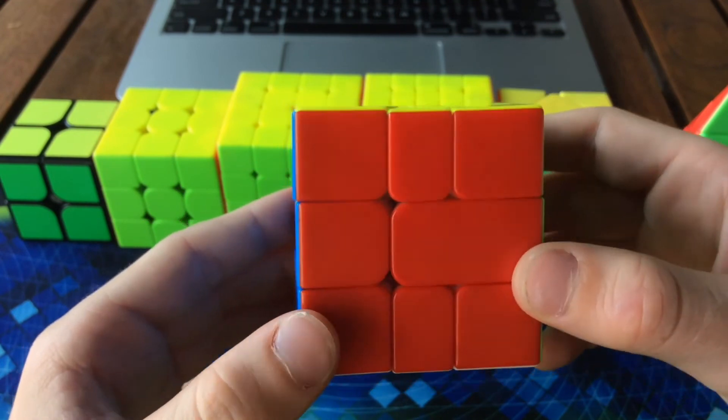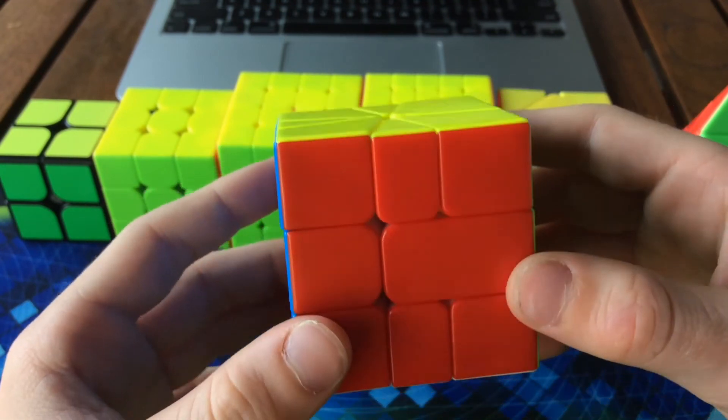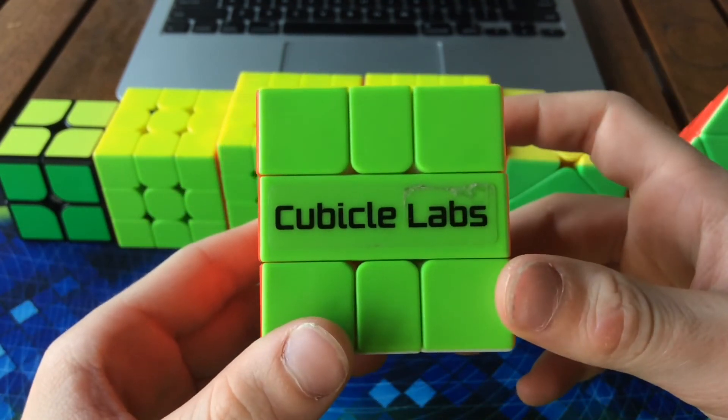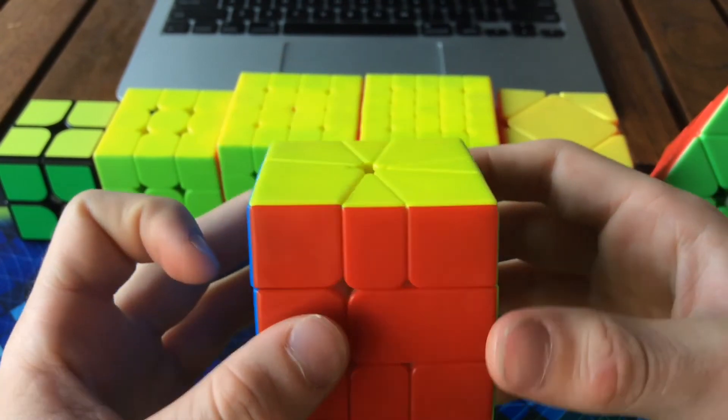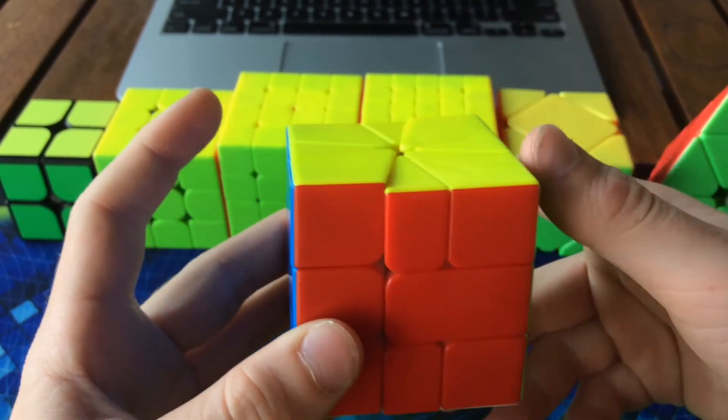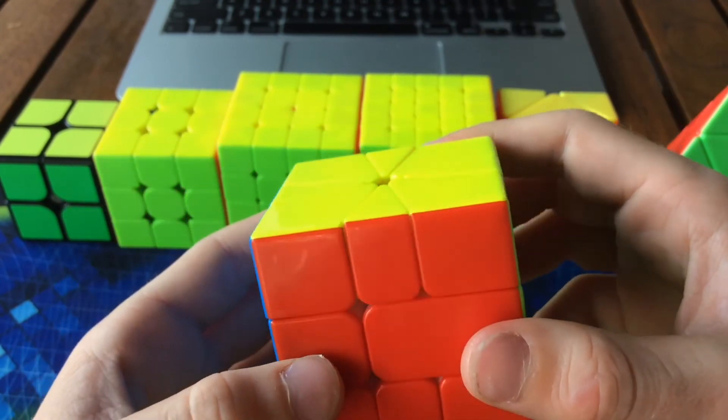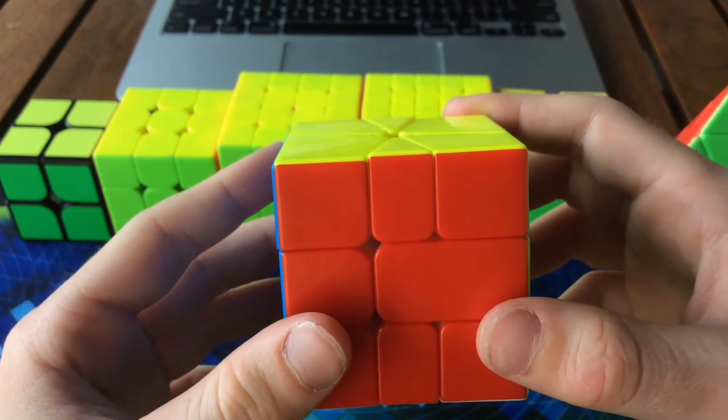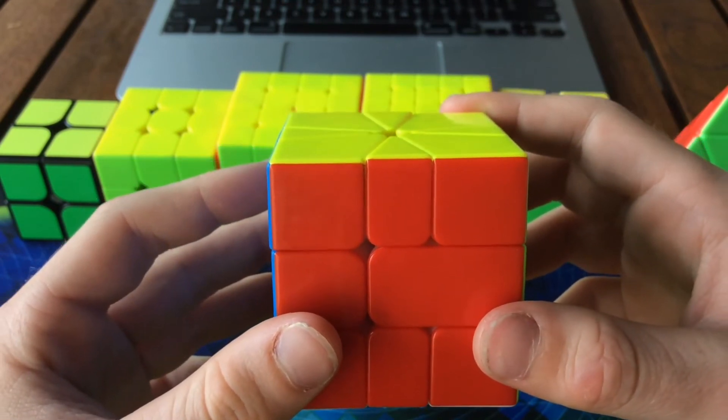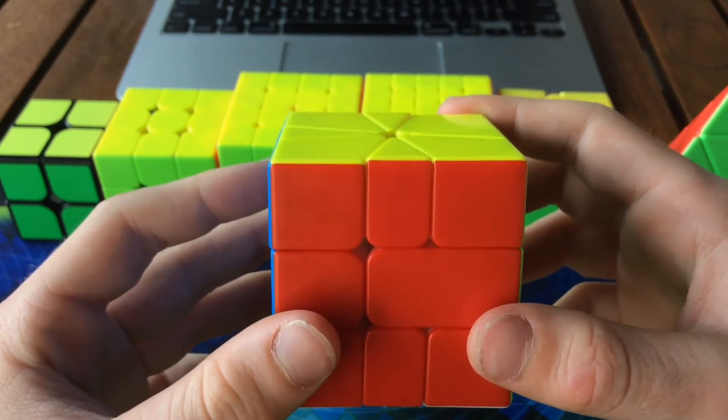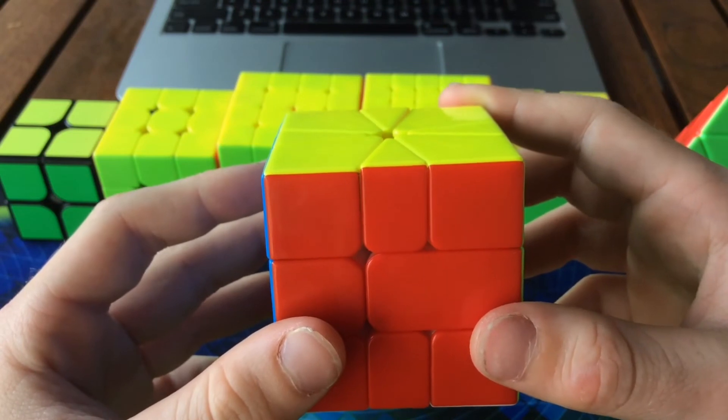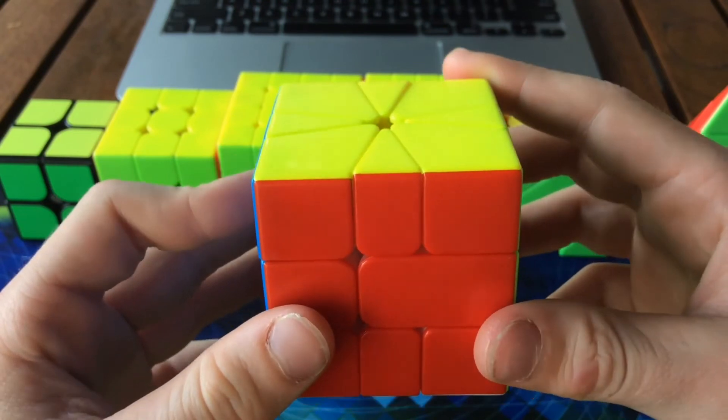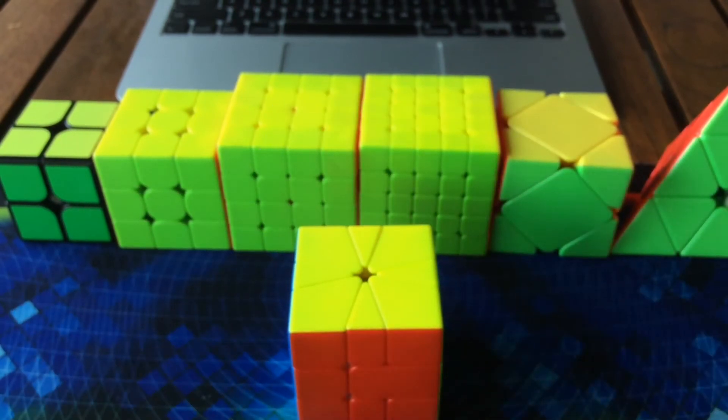Saving the best to last, we have square one, my favorite event. For square one, I'm using the Cubicle Labs Volt MS. This is a square one where the slice is magnetized. It's really good. My goal for square one is to just get at least a sub 24 average, because I did really bad in my last comp, and get a sub 21 single, which would be really nice.